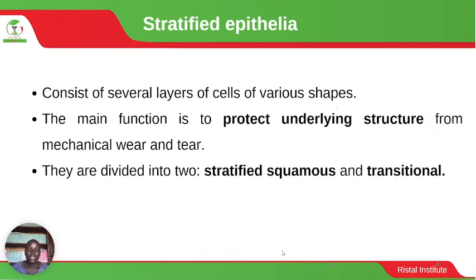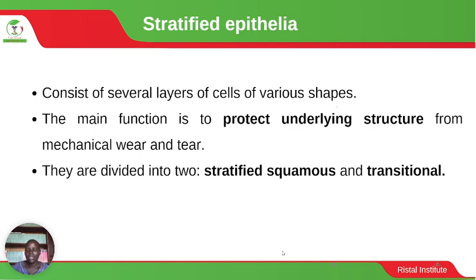Then we have stratified epithelia — the plural form of epithelium. When we talk about stratified epithelium, this consists of several layers of cells of various shapes. The main function is to protect underlying structures from mechanical wear. They are divided into two types: stratified squamous and transitional.